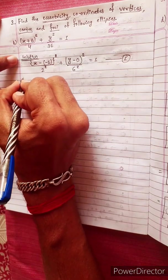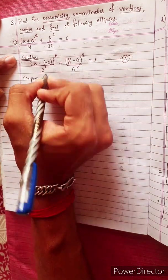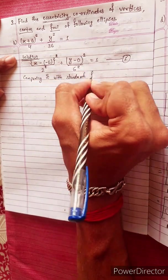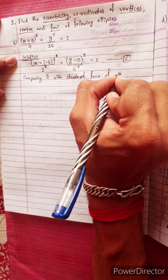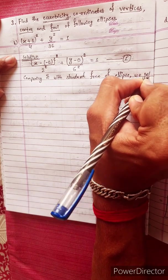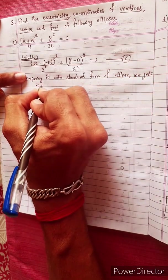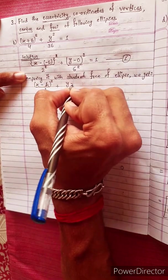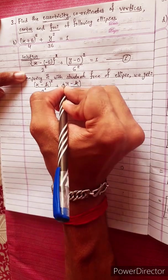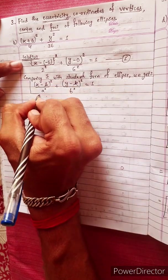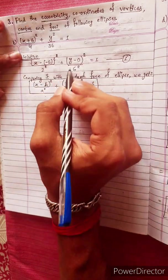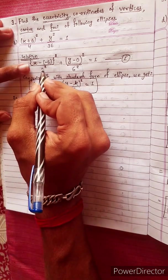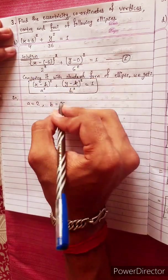Label this as equation 1. Comparing it with the standard form of an ellipse: (x minus h)² divided by a² plus (y minus k)² divided by b² equals 1. From this standard form, we identify a² = 4 (so a = 2), b² = 36 (so b = 6).